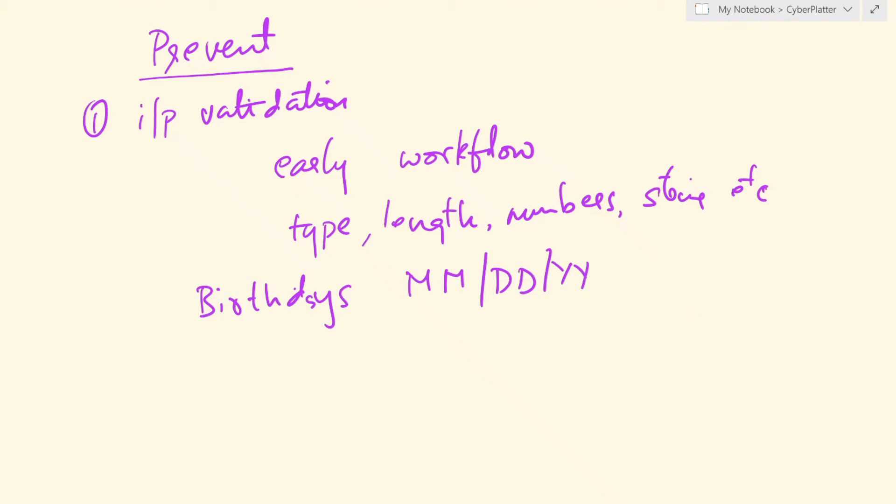We can further drill this down by saying the month should, the date should only be numbers 1 to 12, date should be from 1 to 31. You know like this and whatever we are doing here is one type of input validation called white listing where we are making an allowed list. Only this is allowed nothing else like you can put in only numbers here.